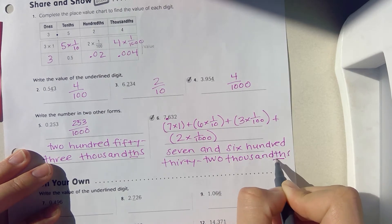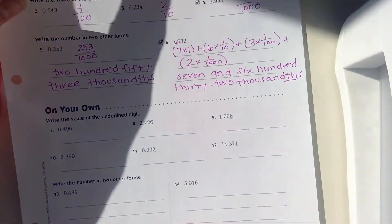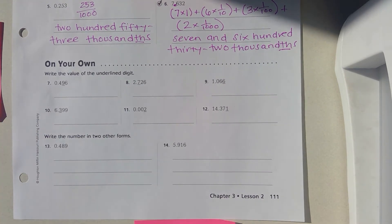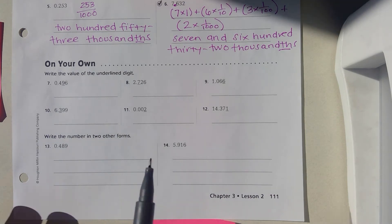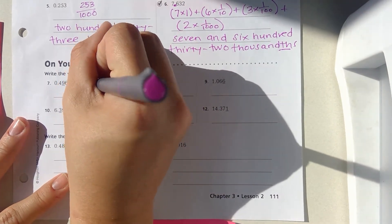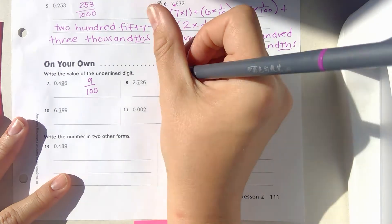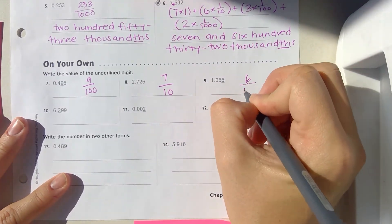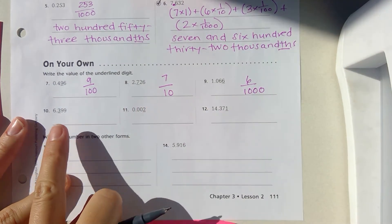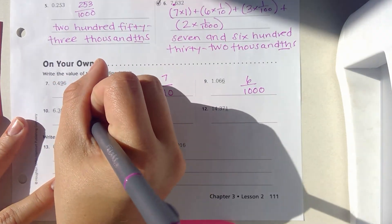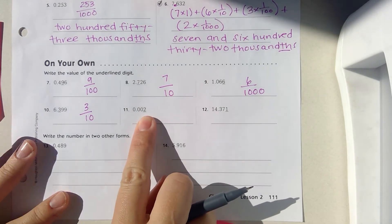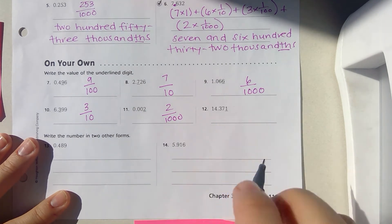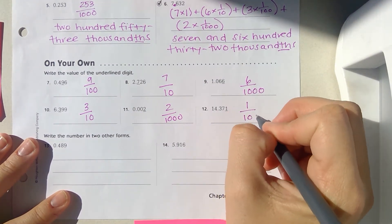I'm going to underline that 'th' to make sure I didn't forget. Alright, let's scoot on down. Write the value of the underlined digit — just the value. So that 9 is in the hundredths, so it would be 9 hundredths. My 7 is in the tenths, it would be 7 tenths. 6 is in the thousandths, so 6 thousandths. 3 is in the tenths, so 3 tenths. 2 is in the thousandths, so 2 thousandths. 1 is also in the thousandths, so 1 thousandth.